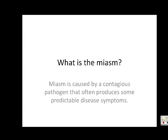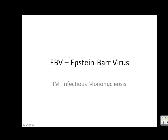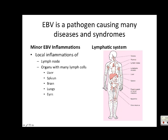A miasm is caused by a contagious pathogen that often produces some predictable disease and symptoms. Why is EBV the miasm and not IM? EBV is the virus; IM is the name of a disease caused by Epstein-Barr virus - but not always caused by EBV. EBV is a pathogen causing many diseases and syndromes.